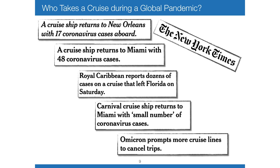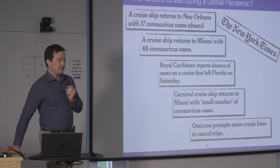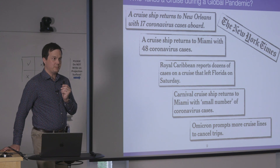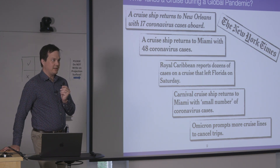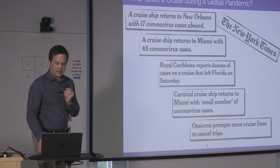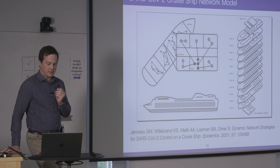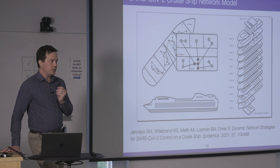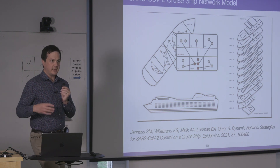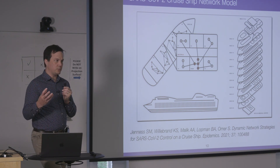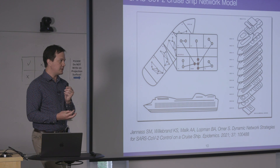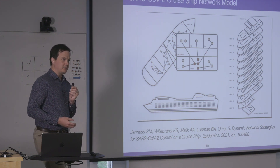Another motivating example is a model specifically for COVID in the cruise ship environment. Who takes a cruise during a global pandemic? Apparently a lot of people in Florida. One of the early COVID outbreaks in February 2020 was on the Diamond Princess cruise ship docked out of Japan. We built a network model to understand potential prevention strategies using only diagnosis and case isolation, given the highly structured network features of a cruise ship where people are passengers or crew, in particular cabins, usually traveling in pairs.